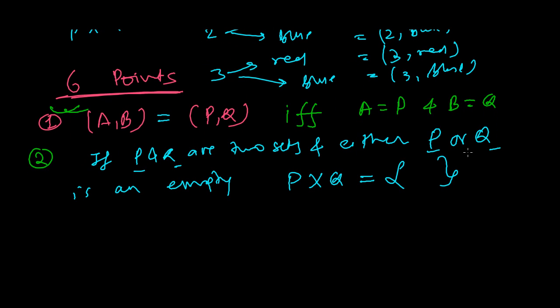So either both are empty or either one is empty, then if you do the Cartesian product you're going to get the empty set. The third point you have to remember is: let's say P and Q are two non-empty sets, and if either P or Q